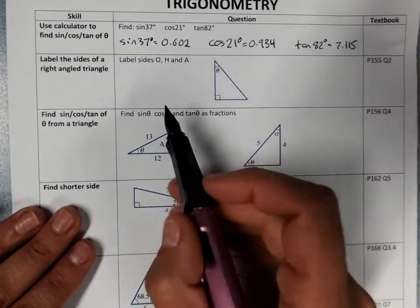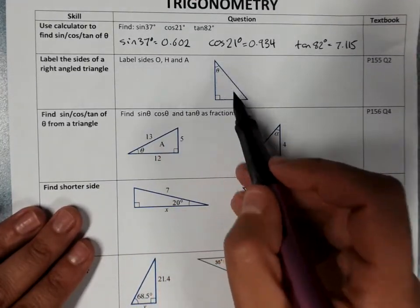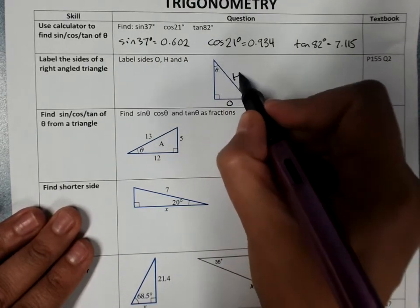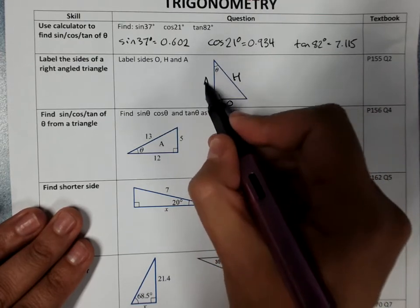Label sides of a right-angled triangle. Opposite the angle. Opposite the right angle, the longest side is our hypotenuse. And next to the angle is the adjacent.